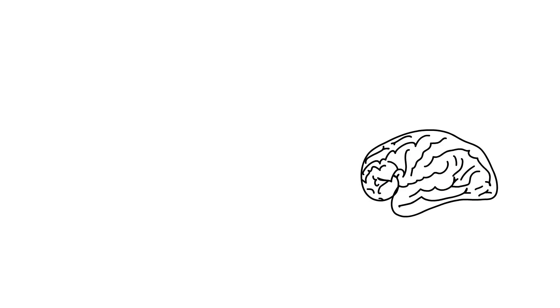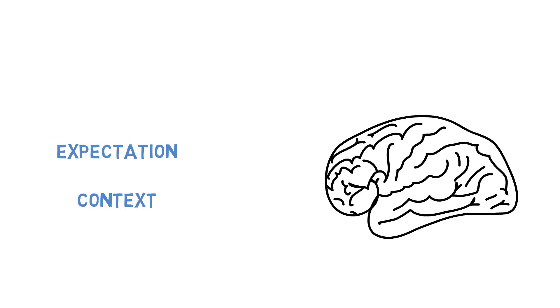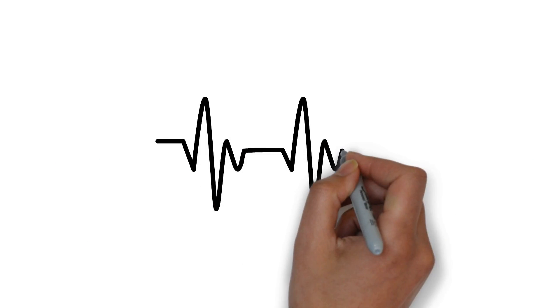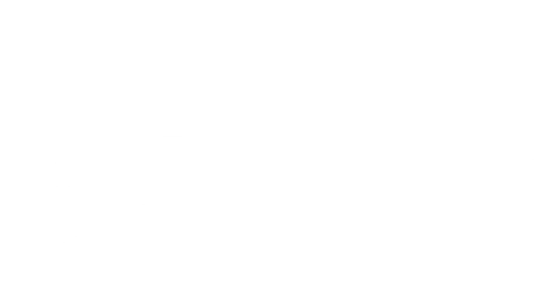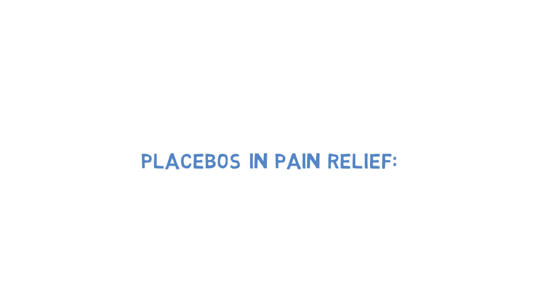Experiments using brain imaging suggest that the brain has a real response to the expectations and context surrounding placebos, which can have an effect on the body. Let's look at how scientists have figured out how the brain reduces pain in response to a placebo. Many studies have looked something like this.